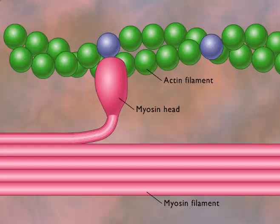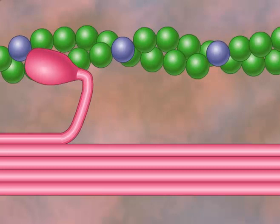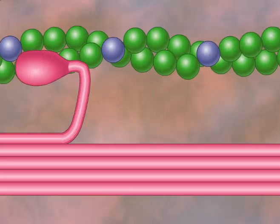Myofilaments can contract or shorten due to interactions between the myosin heads and the actin filaments. Contraction begins with the head of myosin molecules bound to actin on the actin filament. While still bound to actin, the myosin head flexes, pulling the actin filament along with it. This causes the actin filament to slide by the myosin filament.